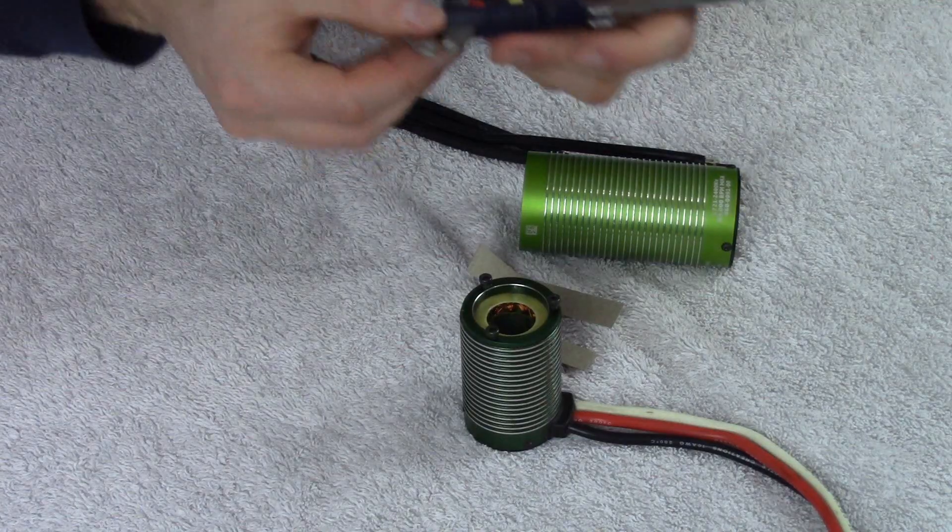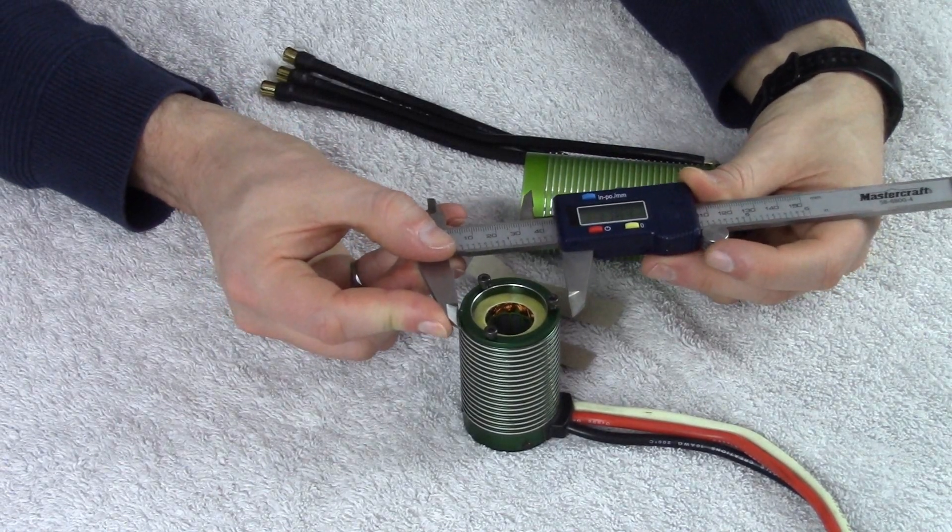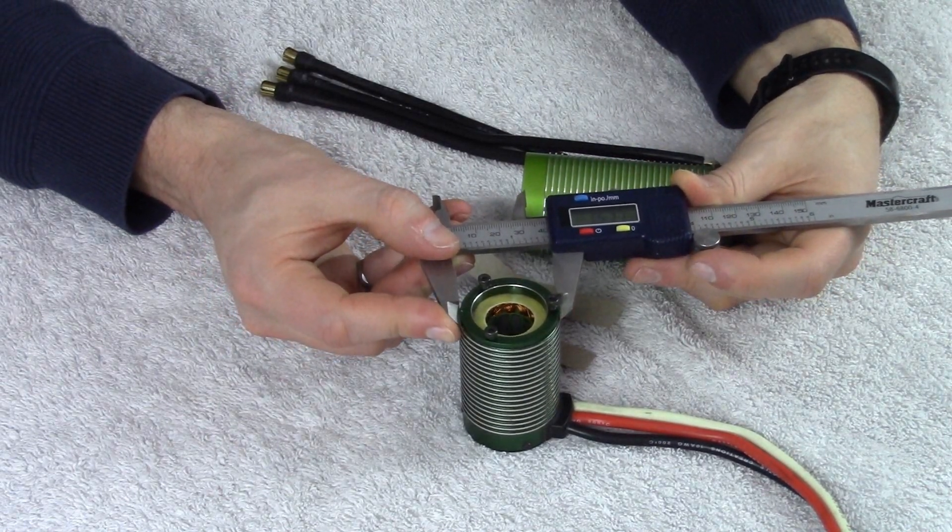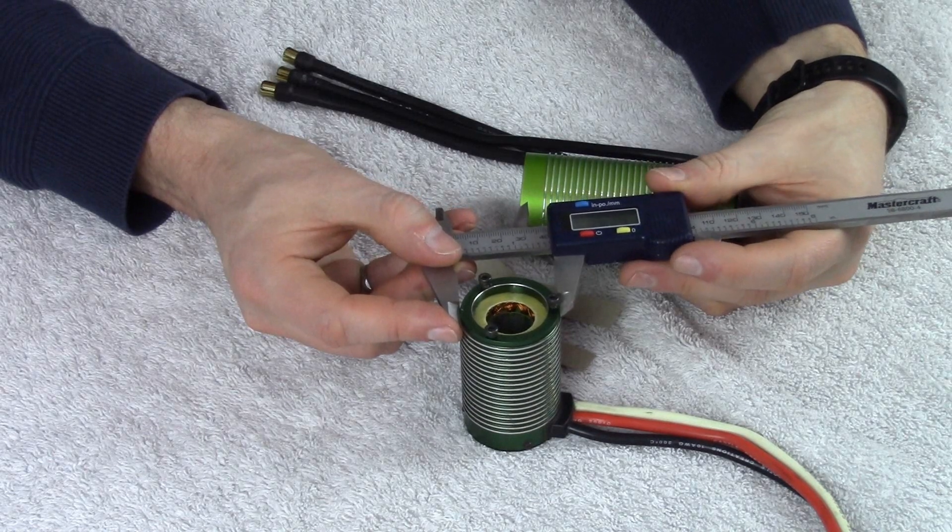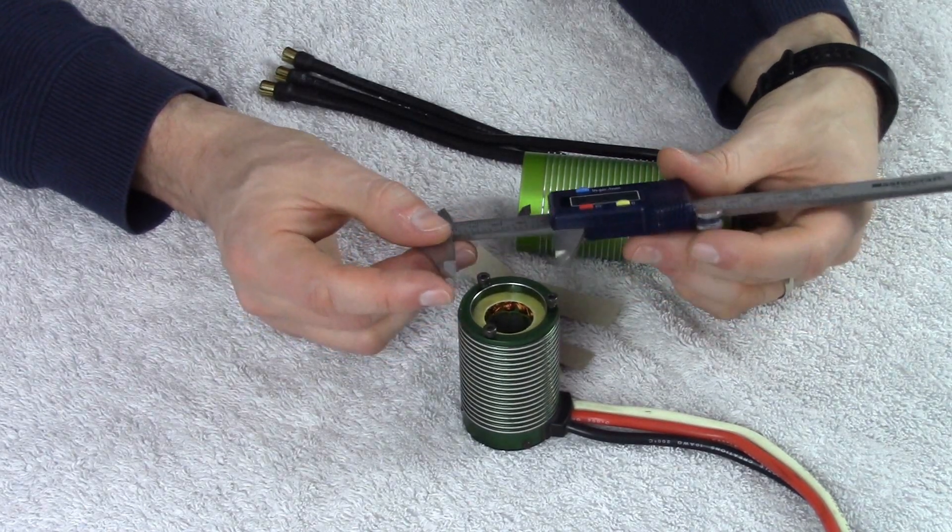So let's break out the calipers and measure the diameter here of this motor. I got to keep in mind, I don't want to measure the fins and include those as part of our measurement. So I'm measuring the diameter here. I get 1.58 inches. We subtract out 0.1 and we get 1.48 inches. So that's right around the 1.5 inches that the 1500 series is.